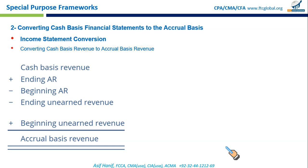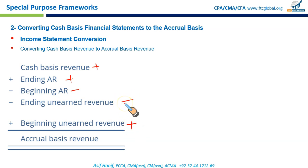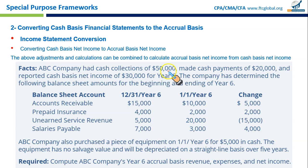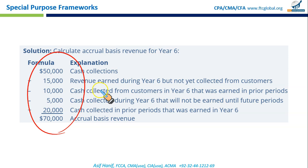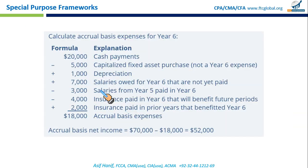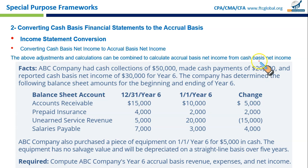Applying the conversion format for revenue: start with cash collections from customers, add ending accounts receivable, deduct beginning accounts receivable, add beginning unearned revenue, and deduct ending unearned revenue. Applying these five adjustments gives you the accrual-basis revenue. You can pause the screen to match the numbers.